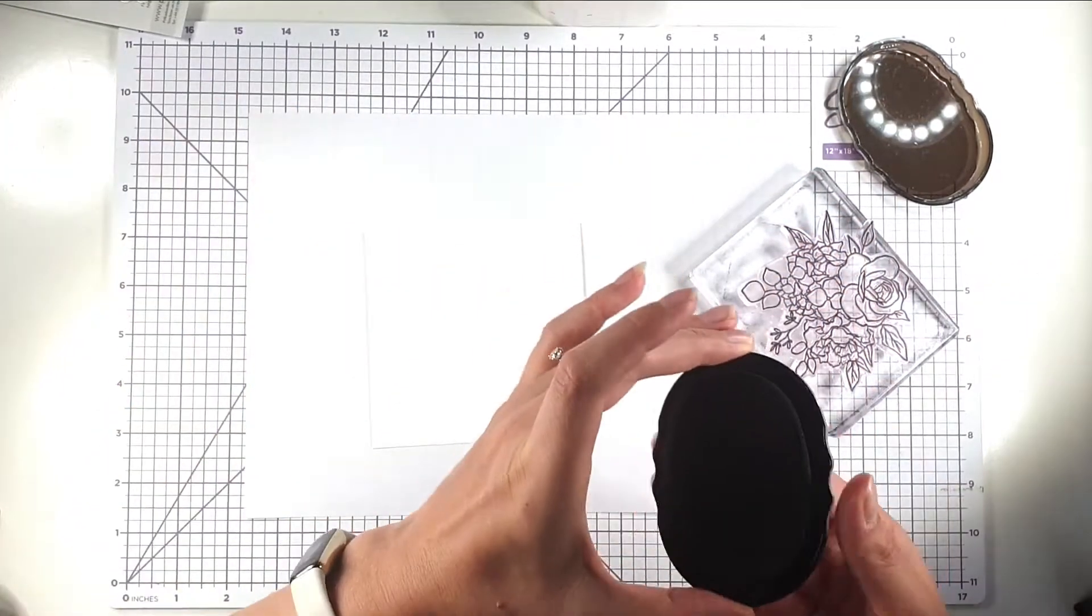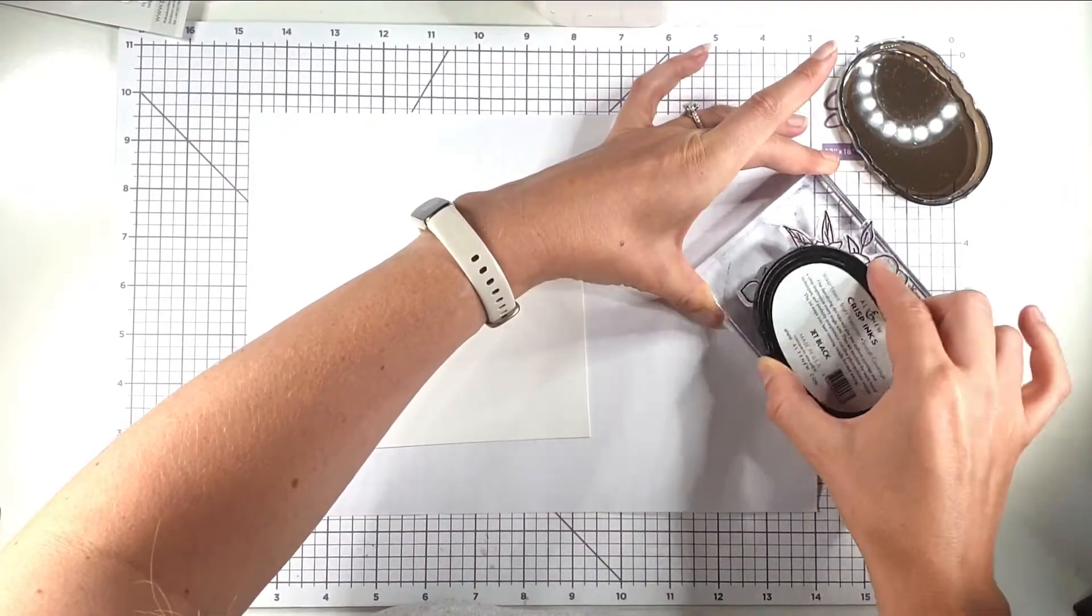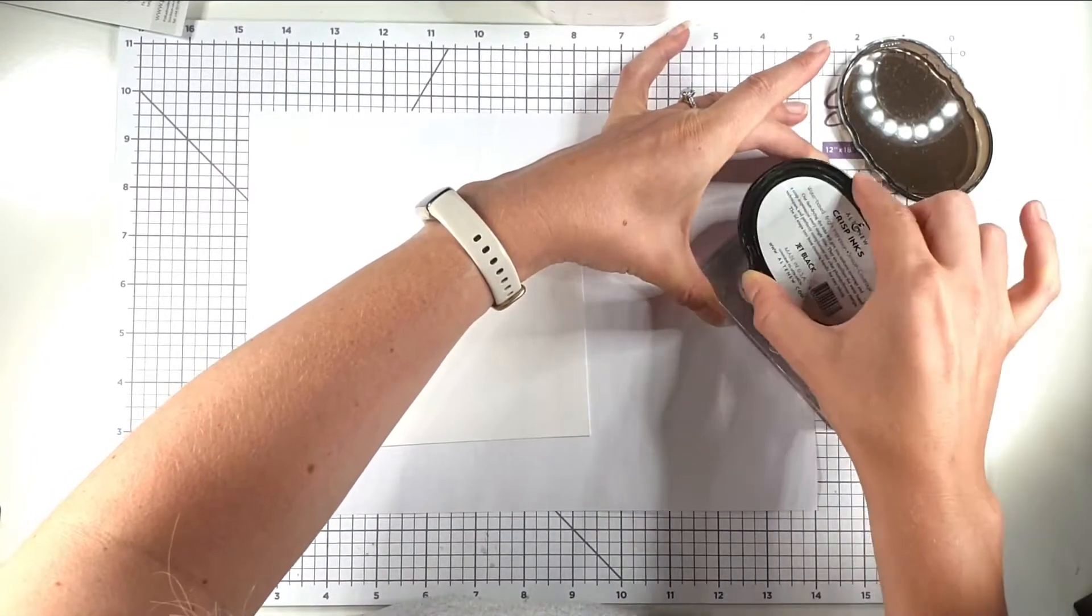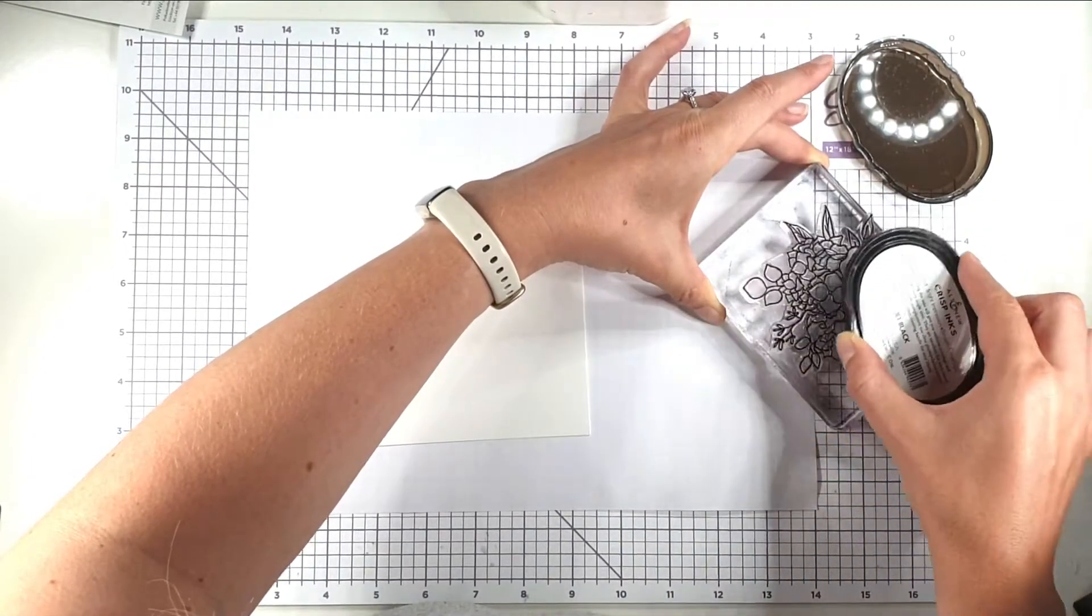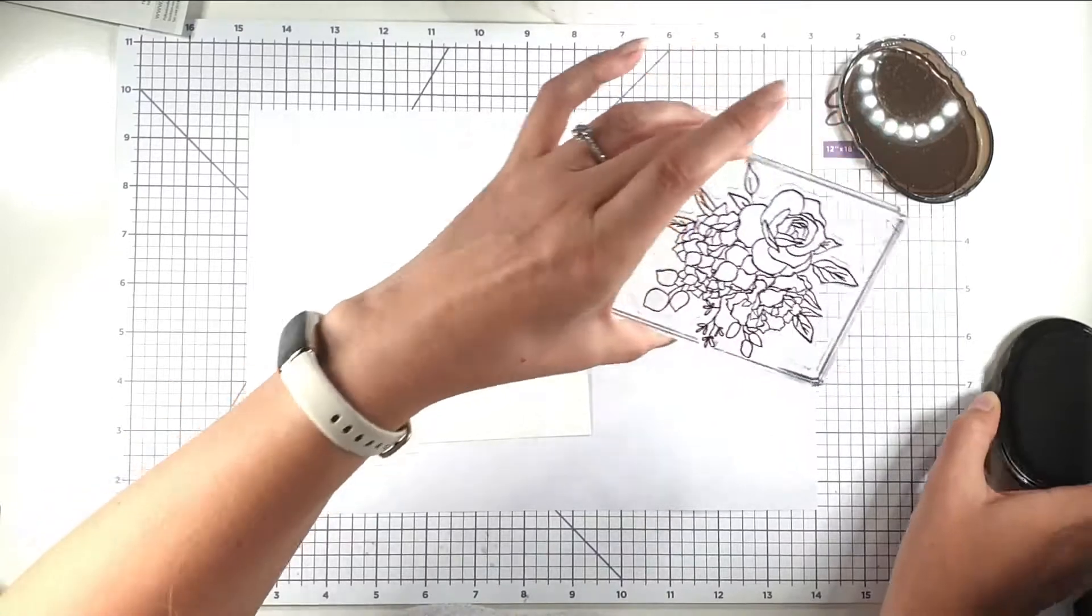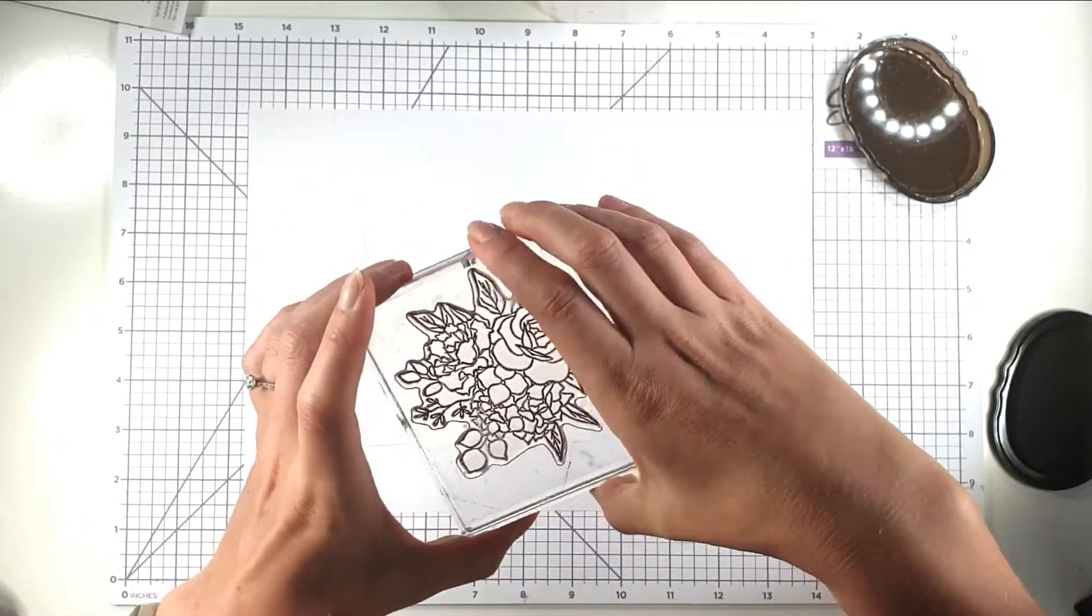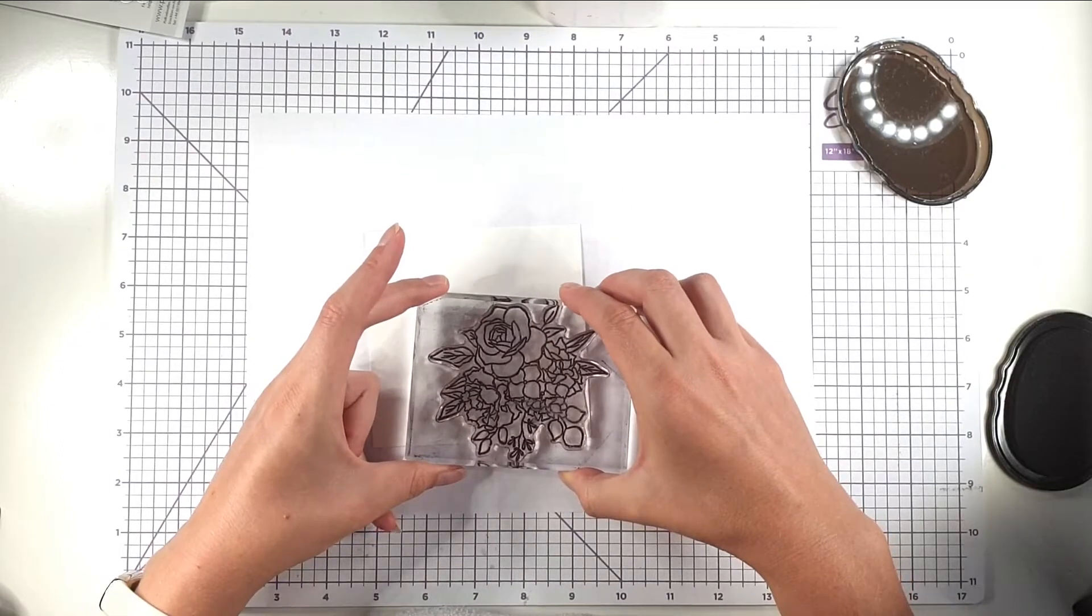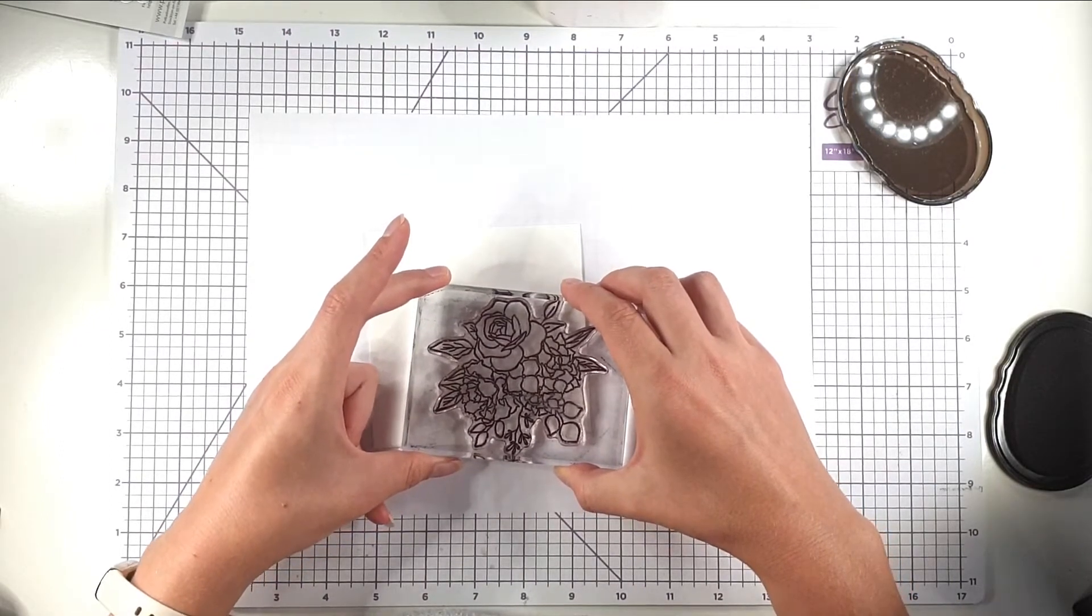So I'm going to use my Jet Black Altenew ink to ink up this large floral. Now I always think when you're using a large stamp just make sure that your ink pad's nice and juicy, and I'm just going to stamp that right in this corner and let it go off the card a little bit as well.